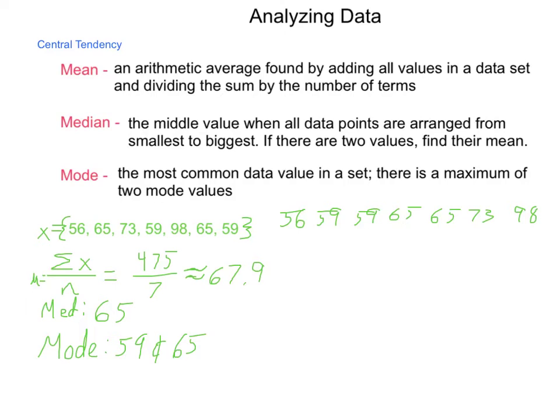An outlier is a data point that is considerably different from all the others. In this case, the number 98 sits apart from everything else. So, what we're going to do is we're going to eliminate 98, and we're going to go through and recalculate our mean, median, and mode without this outlier. Our new mean, mu, is equal to the sum of our data divided by the number of terms. Well, if we take our 475 and take off that 98, it's going to lower the value by almost 100, and we get 377. Now, we have only 6 numbers in our data set. So, 377 divided by 6 will give us 62.8, roughly. So, you can see it made a drastic change in our mean value.